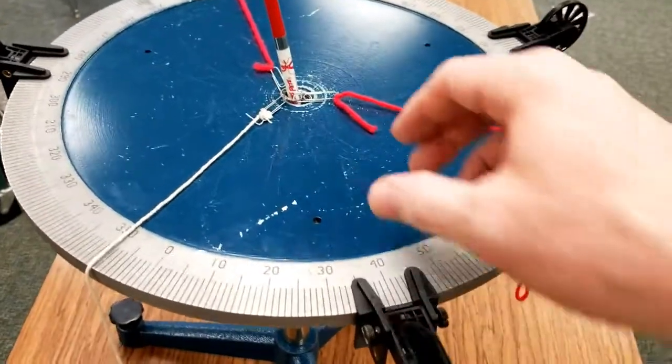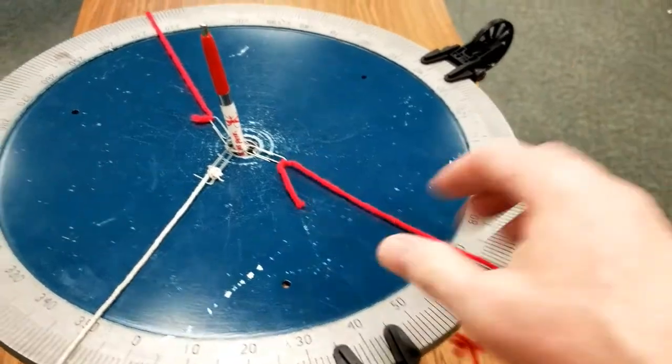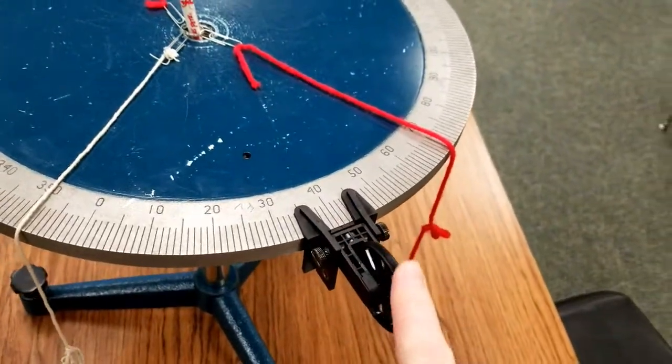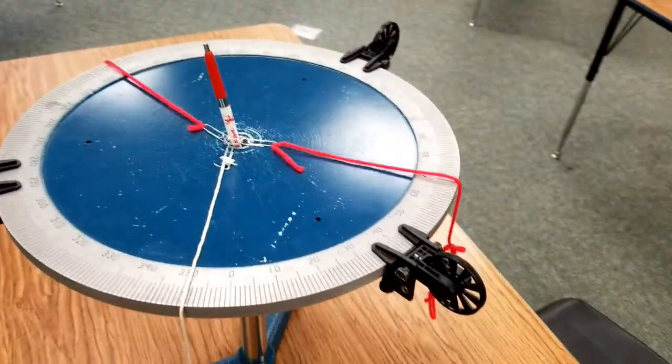This is a force table. What's going to happen is we will attach masses to the ends of the three strings here and then drape the string over the pulley, and we will try to get equilibrium. Let me point out a couple things here.